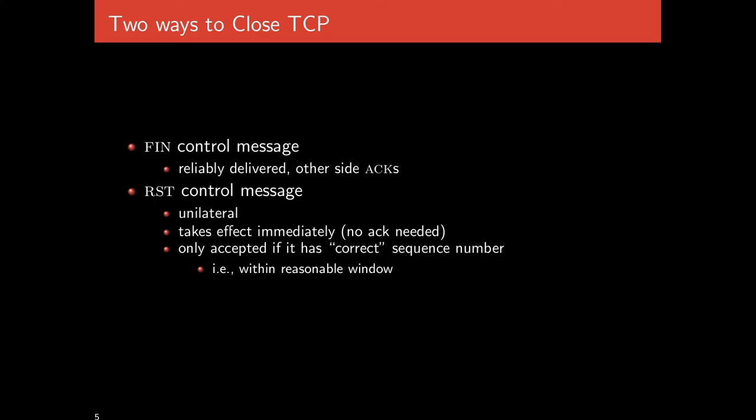There are two ways to close a TCP connection. One is with a FIN — you send a FIN, allowing the half-open connection where one side FINs then the other side FINs, both are acknowledged. It's the polite way to end a TCP connection, consisting of calling close on the socket. Both sides agree that they're done talking.